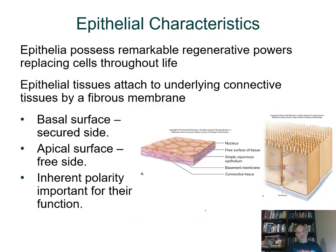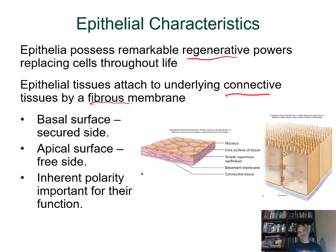Because epithelial tissues are found at surfaces, they get damaged a lot and must have a remarkable ability to regenerate and repair themselves. They're always attached to underlying tissues with the help of connective tissues, which are fibrous — meaning they have protein fibers associated with them.